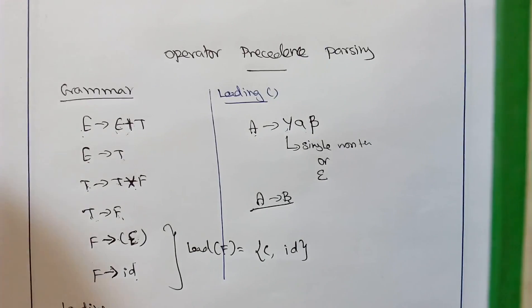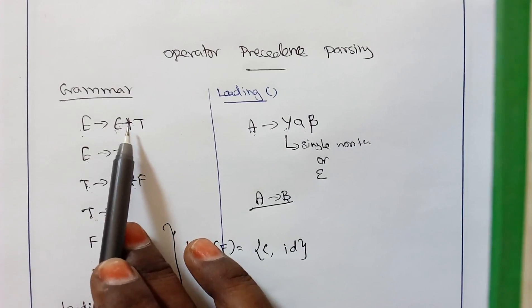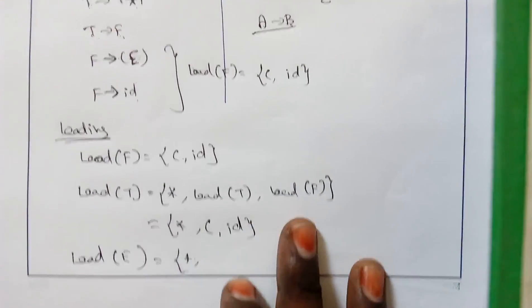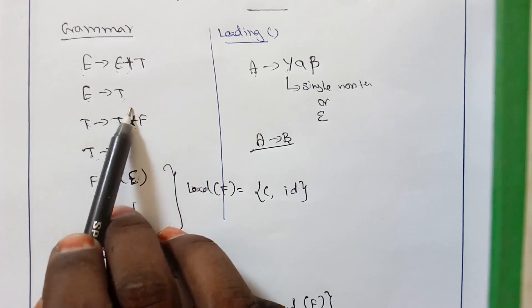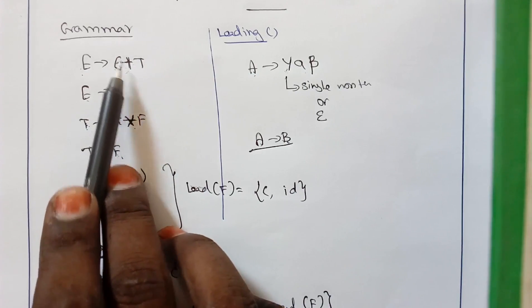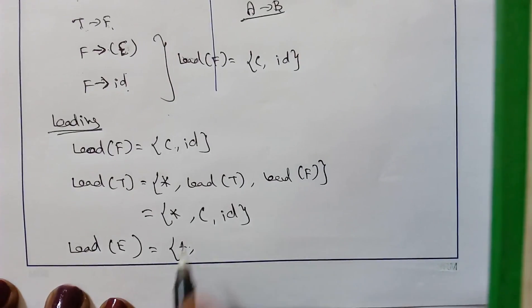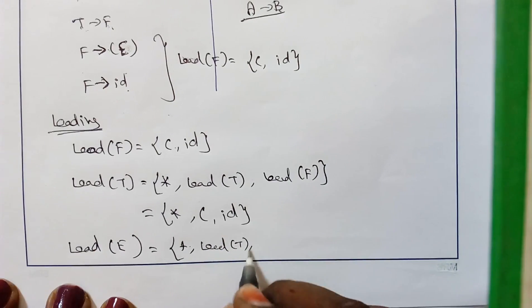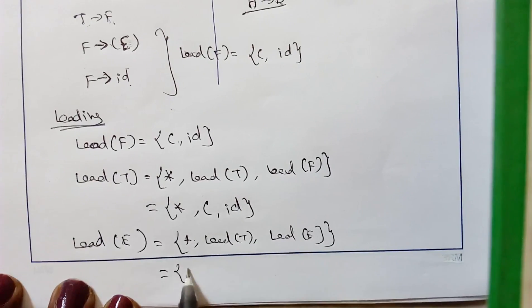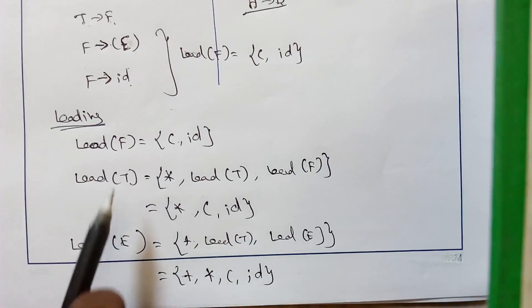For finding LEAD of E: by rule 1, the production E → E + T starts with a single variable E followed by terminal plus, so we add plus to LEAD of E. By rule 2, both productions of E start with a non-terminal, so we add LEAD of E (self-referential, ignore) and LEAD of T. Since LEAD of T = {star, open bracket, id}, the final LEAD of E = {plus, star, open bracket, id}.